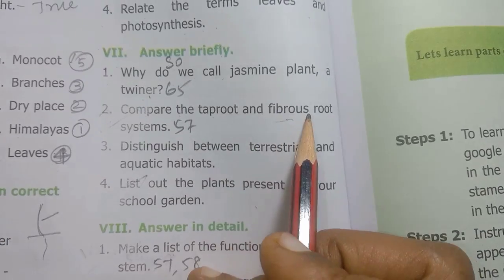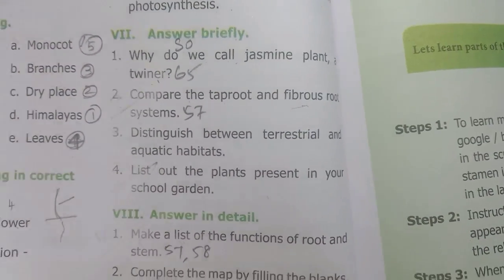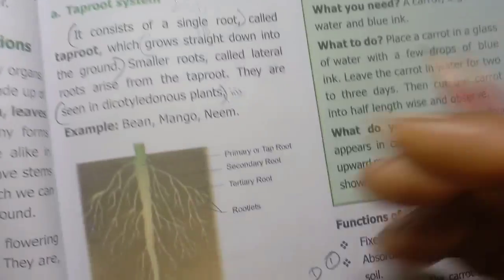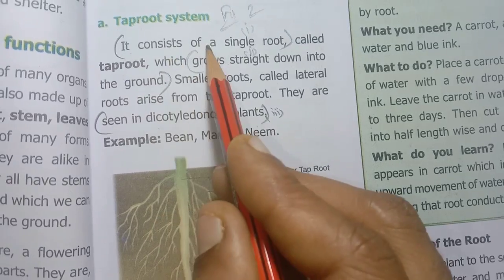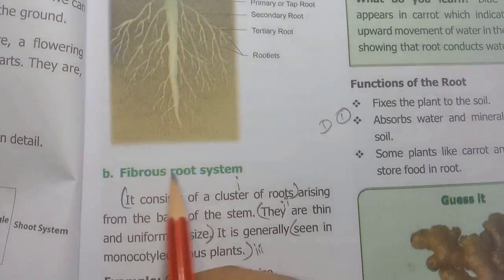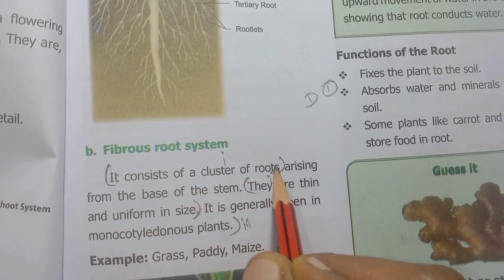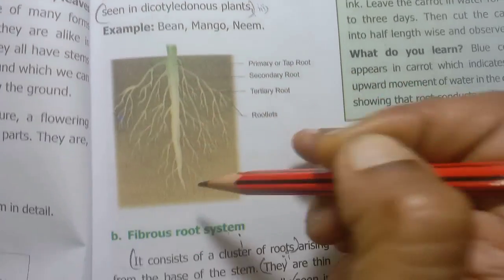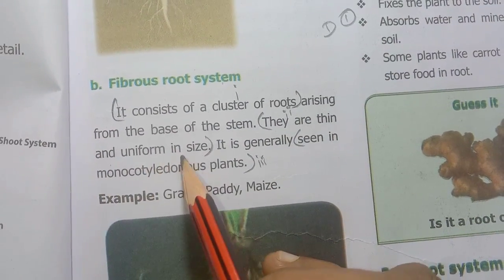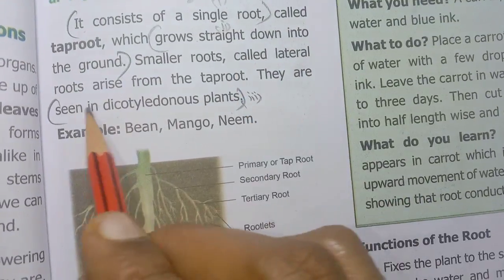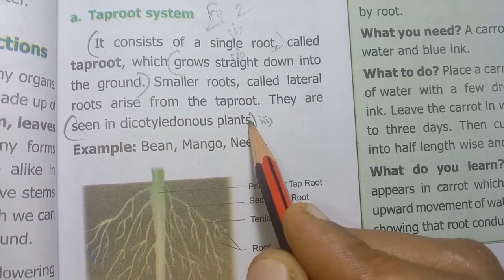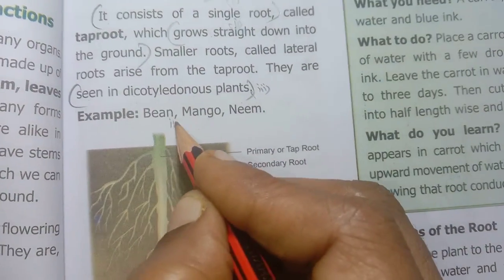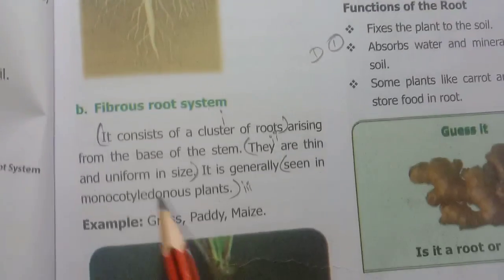Second: Compare the taproot and fibrous root systems — page 57. Taproot: it consists of a single root; it grows straight down into the ground; seen in dicotyledonous plants. Fibrous root: it consists of a cluster of roots; they are thin and uniform in size; seen in monocotyledonous plants.